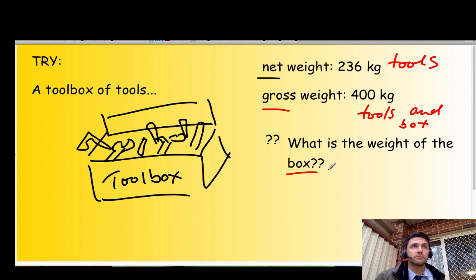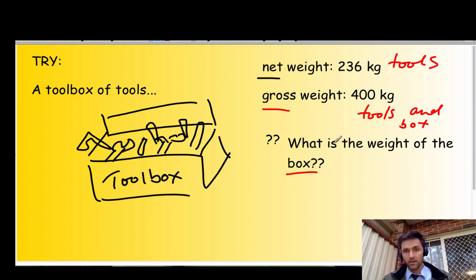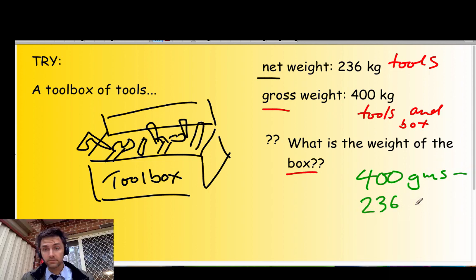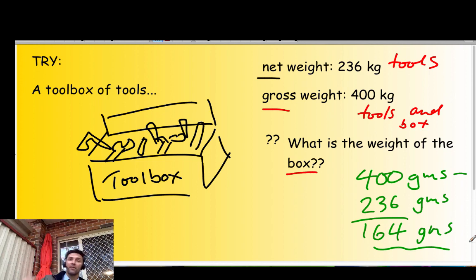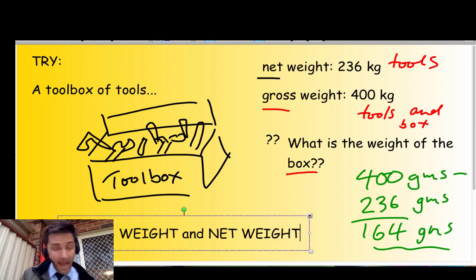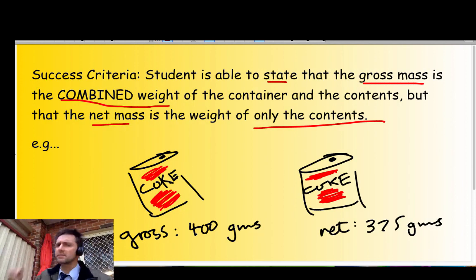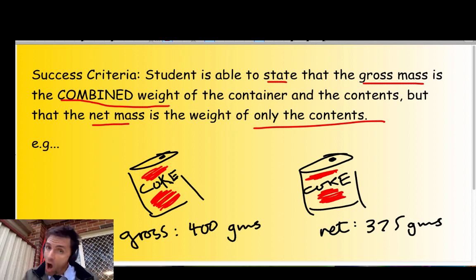Pause and have a go. If the gross weight is 400 grams and the net weight is 236 grams, then the weight of the box would be 400 grams take away 236 grams, which is 164 grams. I hope you got that correct. This has been Teach Together Try, trying to get you to understand the difference between gross weight and net weight. I really hope you are now able to state that the gross mass is the combined weight of the container and the contents, but the net mass is the weight of only the contents. You've probably got an activity to do — enjoy that. Thank you very much.